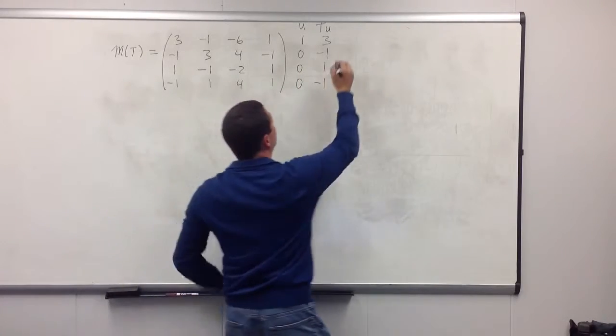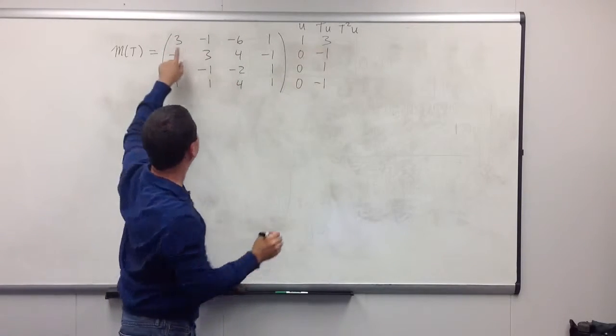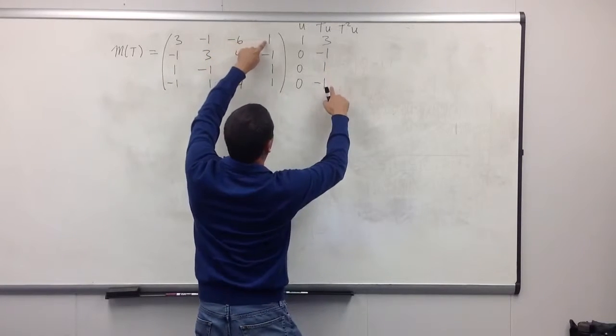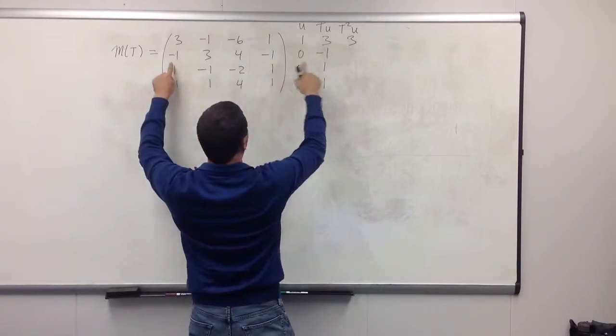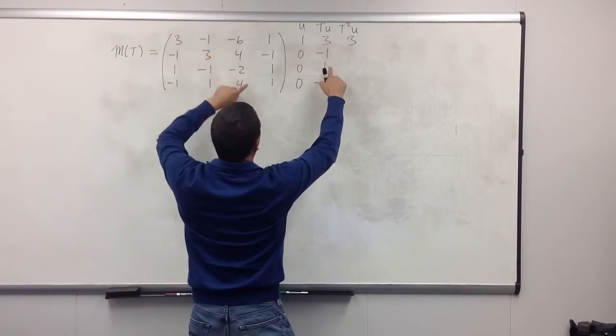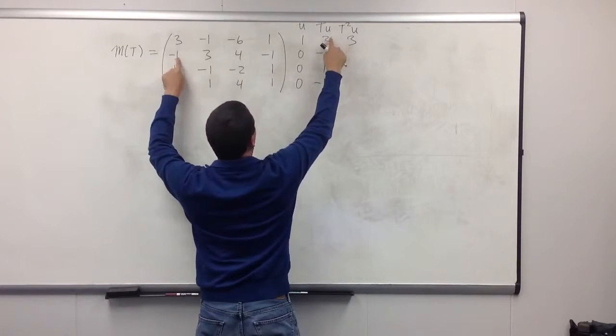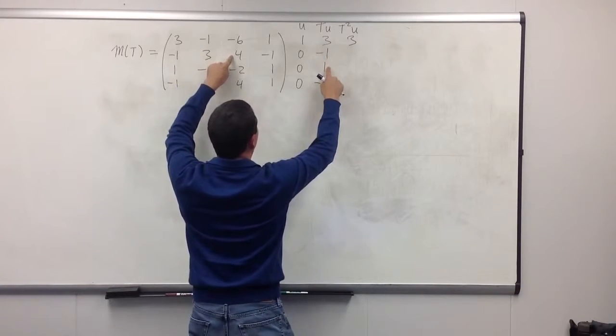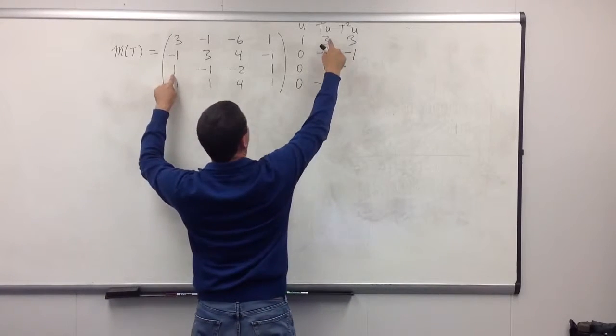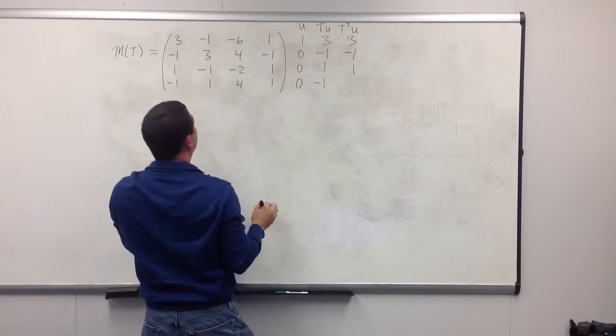So, we go to T squared u. I have to apply the matrix now to this column. Let's see, we get 9, 10, 4, 3. Okay, now the second one. 1, and 3 is 4. I'm sorry, we skipped one. Minus 3, minus 3 is 6, plus 4 is minus 2, plus 1 is minus 1.